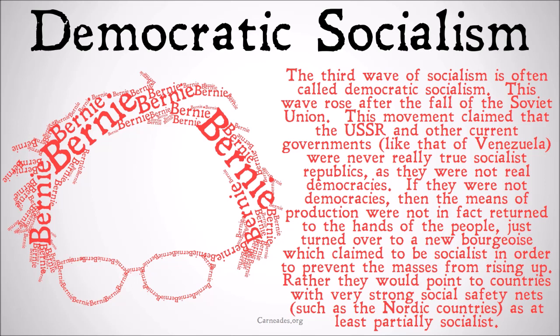These states just turned power over to a new bourgeoisie who claimed to be socialist in order to prevent the masses from rising up — convincing people not to revolt by saying 'we are the proletariat, we are the downtrodden masses.' Democratic socialists would rather point to countries with very strong social safety nets that are strong democracies, such as the Nordic countries, as at least partially socialist, having a true democracy with state-run enterprises such as the health care system or the education system.